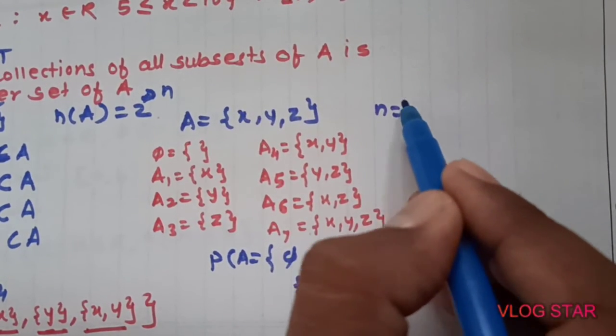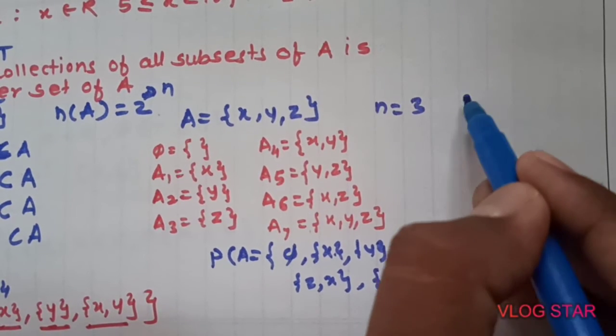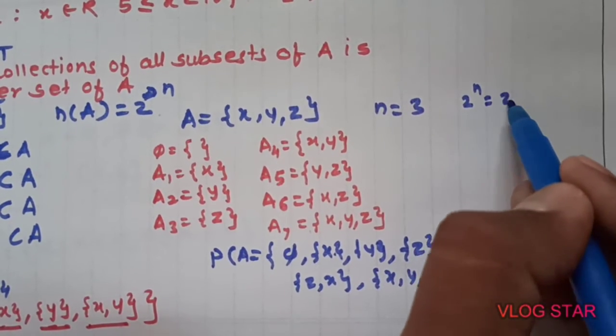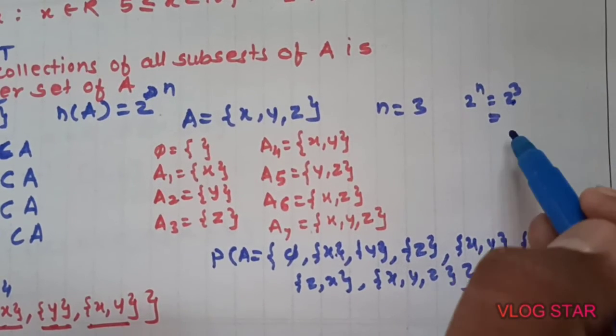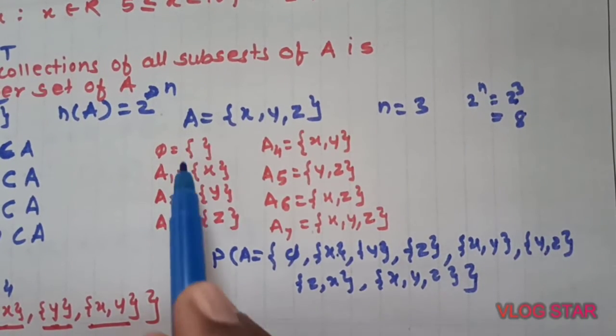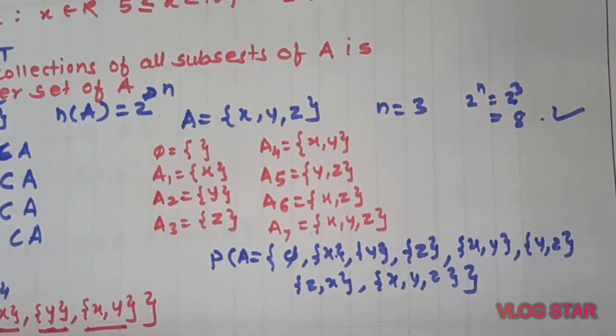Here there were 3 members, so what is 2 raise to n? 2 raise to 3 equals 8. So 8 members are here. This is the formula to find how many elements in a power set.